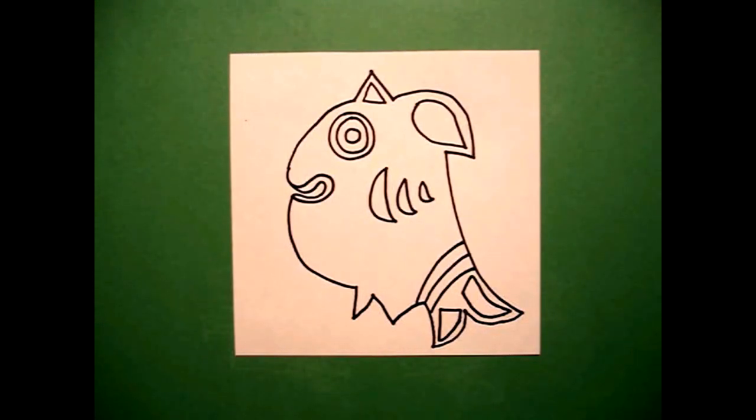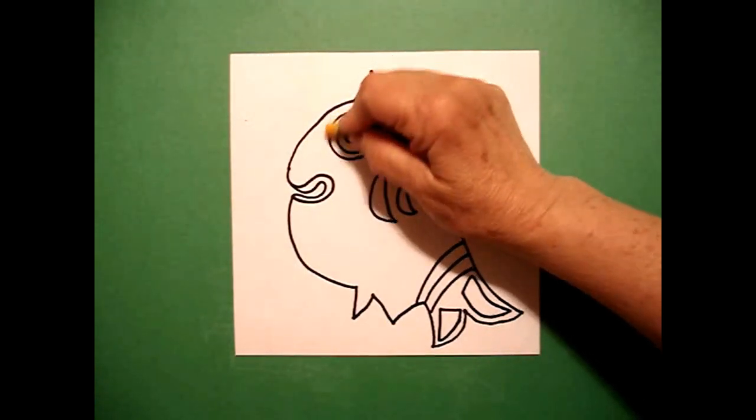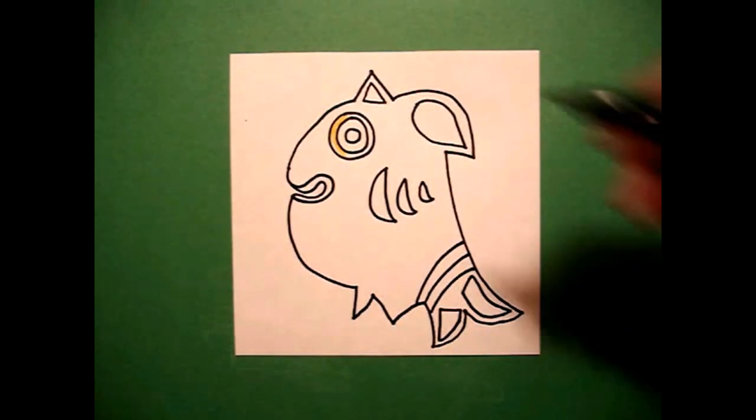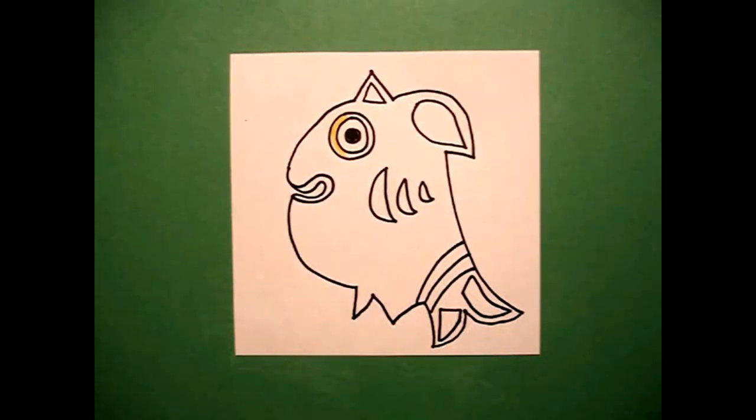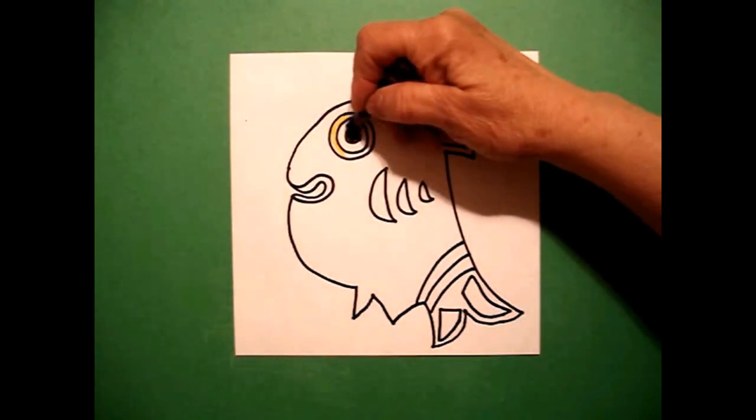Okay, let's color this in. Now the thing about African art is that it is extremely bright colors. So I'm going to do a yellow-orange around my eyeball. I'm going to color the center black.